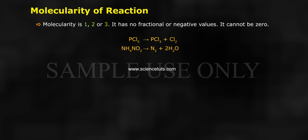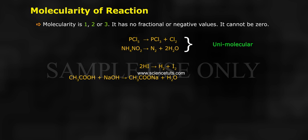NH4NO2 gives N2 plus 2H2O (unimolecular). 2HI gives H2 plus I2. CH3COOH plus NaOH gives CH3COONa plus H2O (bimolecular). 2NO plus O2 gives 2NO2.